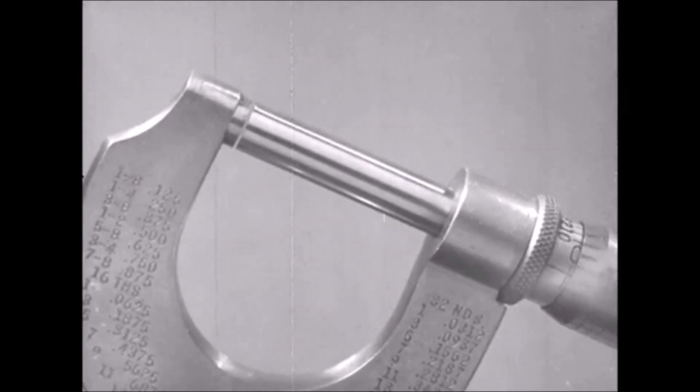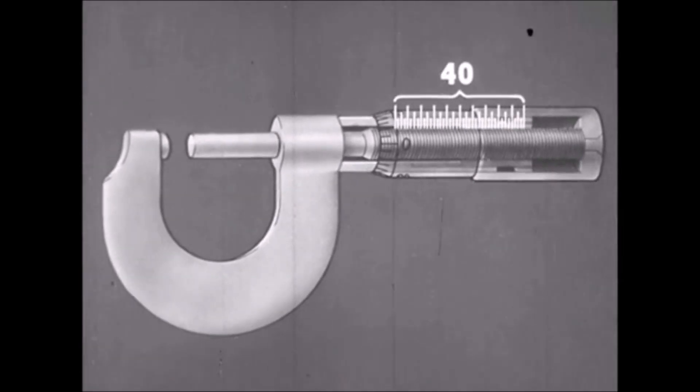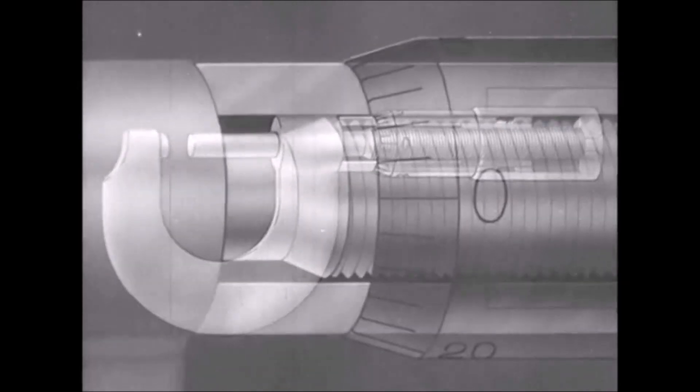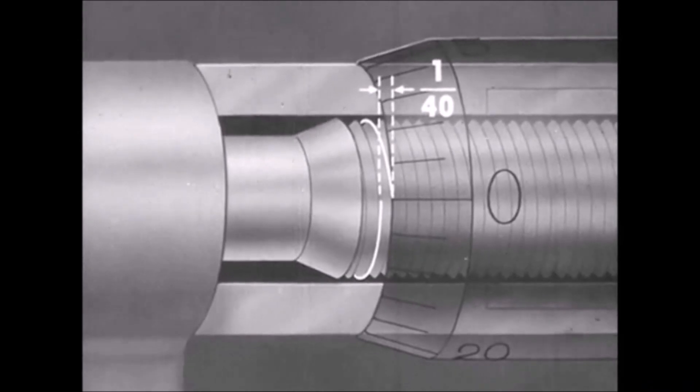The micrometer uses the principle of the screw to control the movement of the spindle. The screw has 40 threads to the inch. Forty turns of the spindle move it one inch. Therefore, one complete turn of the spindle moves it exactly one-fortieth of an inch. One-fortieth of an inch is .025, 25 thousandths.